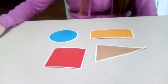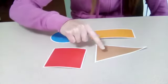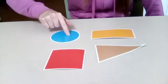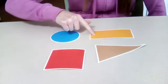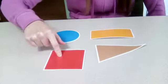I have four shapes in front of me. One, two, three, four. I have a circle, a rectangle, a triangle, and a square.